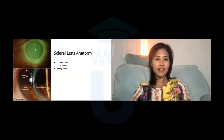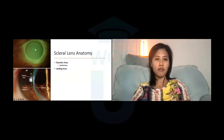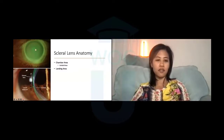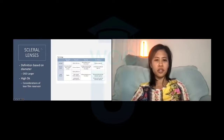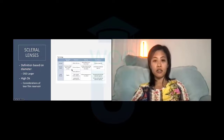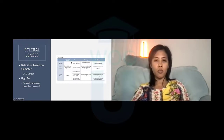Past the chamber is the landing area, which rests on the scleroconjunctival shape — this is where the majority of the weight bears on a full scleral lens. Full scleral lenses are lenses that completely vault the corneal surface, with weight resting on the scleroconjunctival shape. This is differentiated from a corneal scleral lens where part of the weight rests on the cornea and some on the sclera, and from a corneal lens where all the weight rests on the cornea.